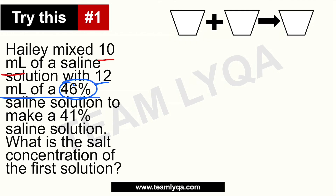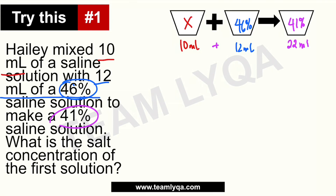Tapos, yung sumunod is yung 12 ml na 46%. Tapos, sumunod yung 41%. So lalagyan lang natin sya dun sa blanks. Dito, meron kang 10 ml — hindi natin alam kung ano yung percentage nya. Dito naman, you have 46%, tapos ang dami nya naman ay 12 ml. Tapos dito sa kalalabasan, we have 41%, tapos ang dami nya — pag pinagsama natin yung 10 at 12 — that would be 22 ml. So isulat na natin yung ating magiging equation: we have 10x plus yung 46 times 12 equal sya sa 41 times 22.